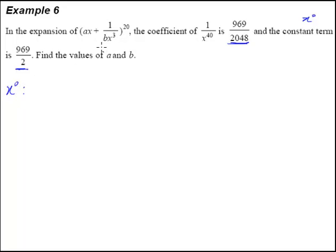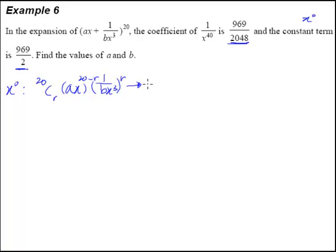If you look at this, it's quite difficult to tell. We know that the term we want would be 20C_r. Of course, the first term is ax, and the second term is 1 over bx cubed. Since this is r, this will be r, and this will be 20C_(20-r). We want this term to be x to the power of 0. So we just pay attention to the power of x — we have x to the power of (20 minus r), divided by x to the power of 3r, equal to x to the power of 0.